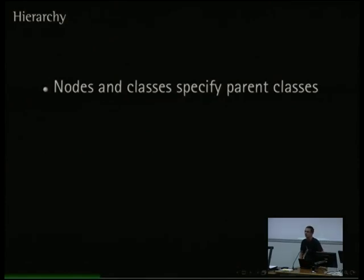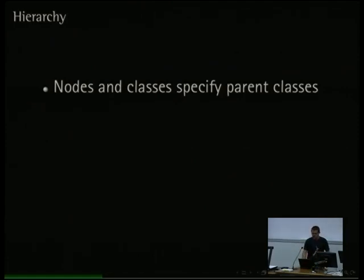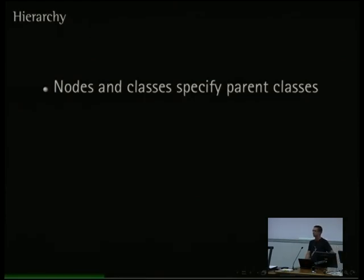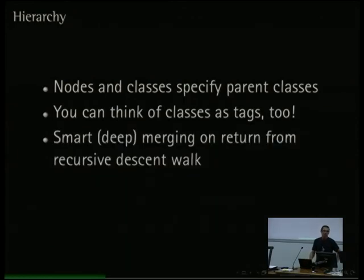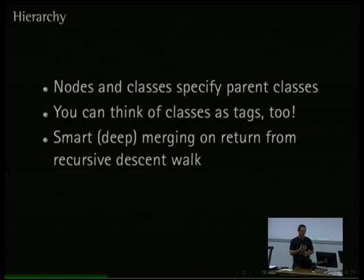Let me tell you about the hierarchical/recursive aspect. We're talking about nodes and classes — we tag nodes with classes. These can specify parent classes. Once you have parents, you have trees, and once you have trees, you have hierarchies. Once we have this hierarchy, Reclass does what I call — to show off my CS background — a smart deep merging on a return from a recursive descent walk. There are different storage backends; at the moment there's only one provided, and it's YAML FS.